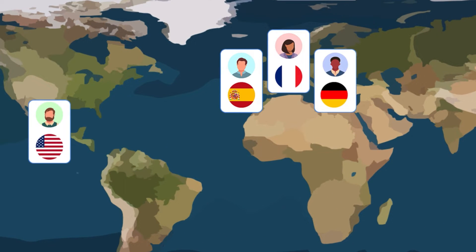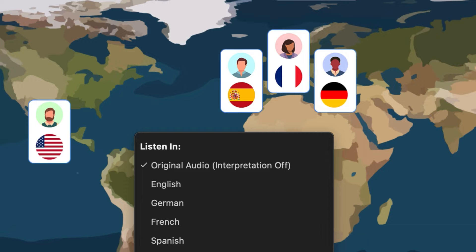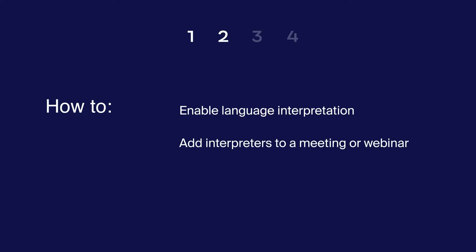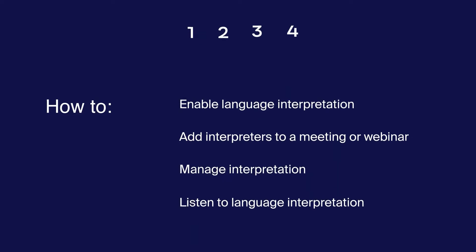Zoom's language interpretation feature allows you to connect with your meeting or webinar participants in multiple languages. Your participants will be able to select their desired language channel and hear both the original and interpreted audio. In this video, you'll learn how to enable the language interpretation feature, add interpreters and manage interpretation in your meeting or webinar, and how your participants can listen to their language channel of choice.